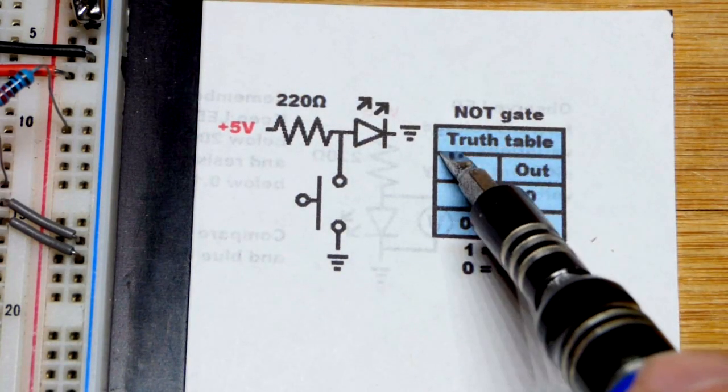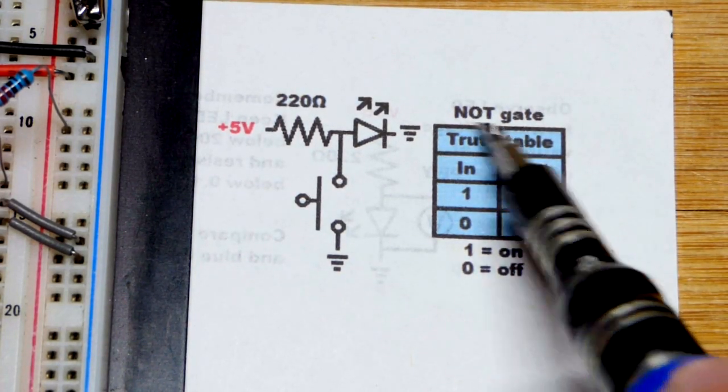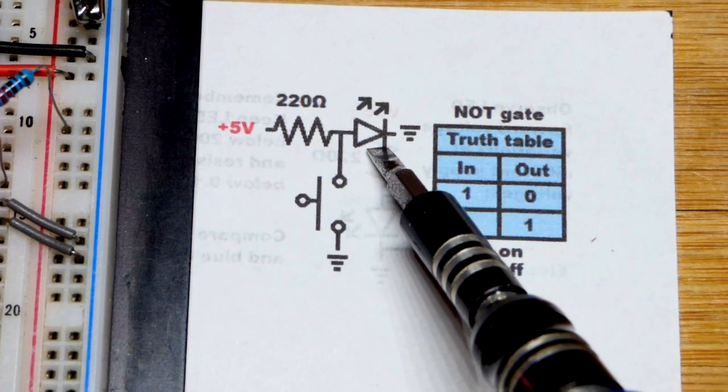In this video, we're going to look at the NOT logic gate. You could also call it an inverter, a digital inverter.